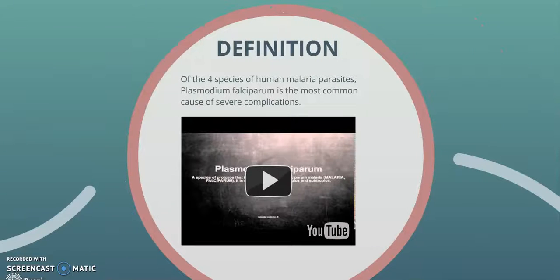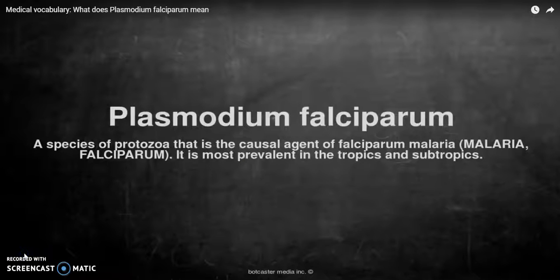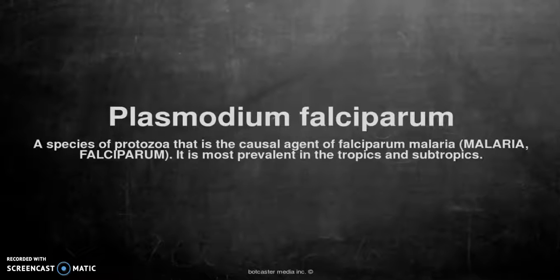Definition of the four species of malaria parasites. Plasmodium falciparum is the most common cause of severe complications. It is a species of protozoa that is the causal agent of falciparum malaria.